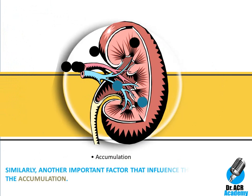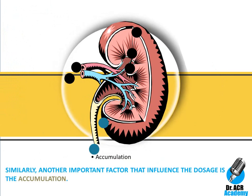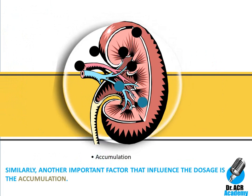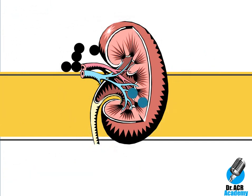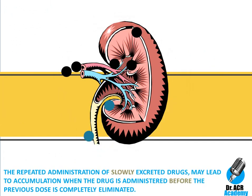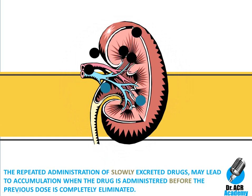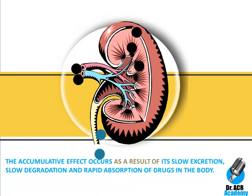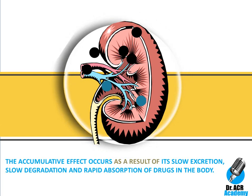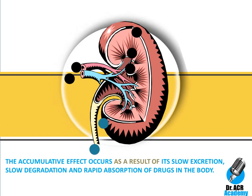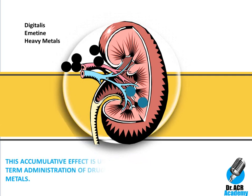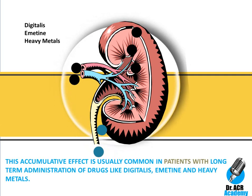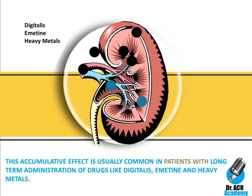Another important factor that influences dosage is accumulation. Repeated administration of slowly excreted drugs may lead to accumulation when the drug is administered before the previous dose is completely eliminated. The accumulative effect occurs as a result of slow excretion, slow degradation and rapid absorption of drugs in the body. This is common in patients on long-term administration of drugs like digitalis, amatine and heavy metals.